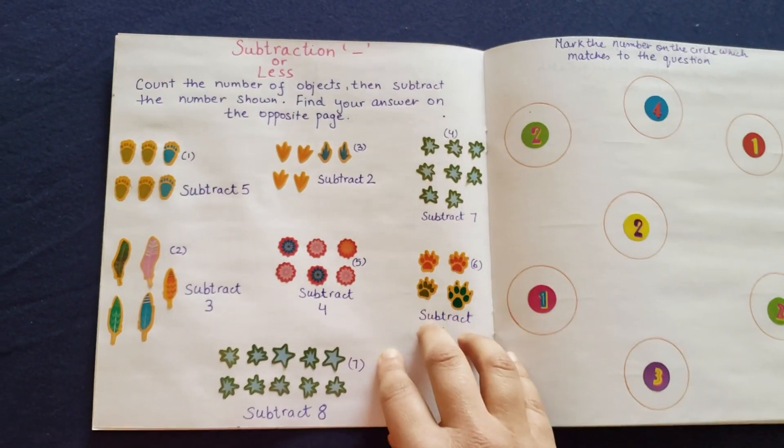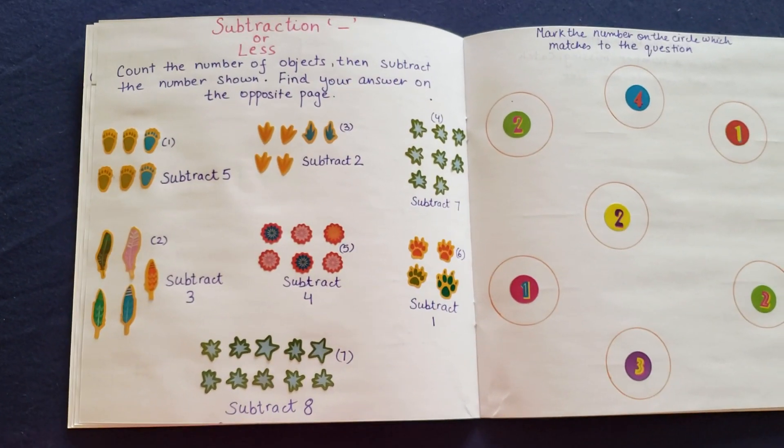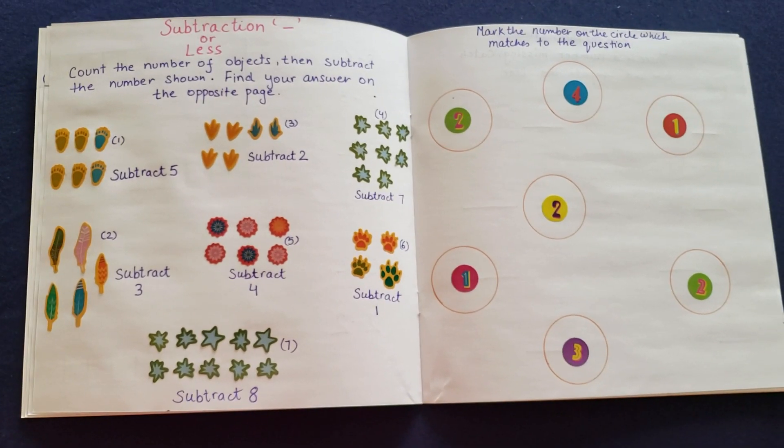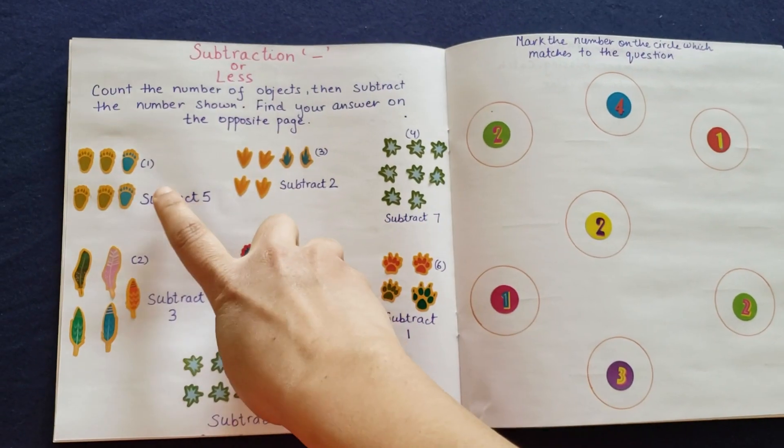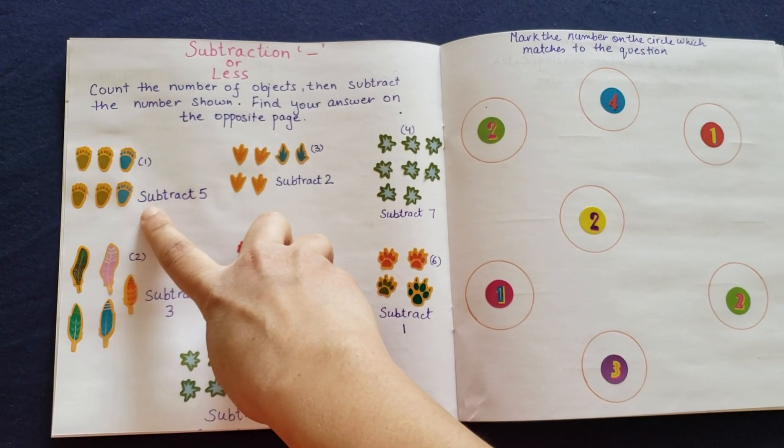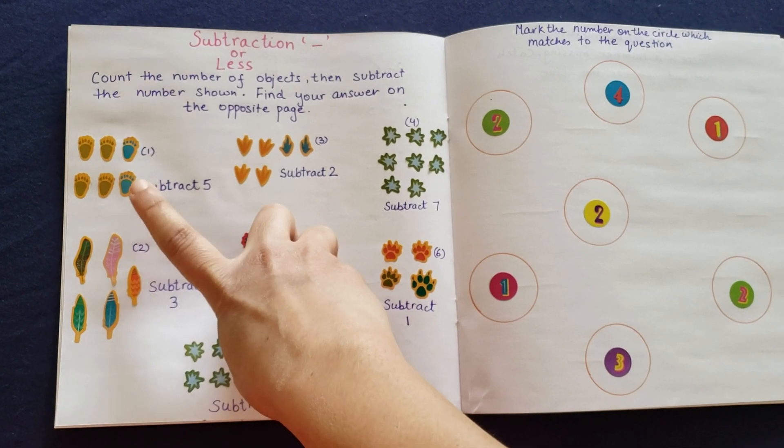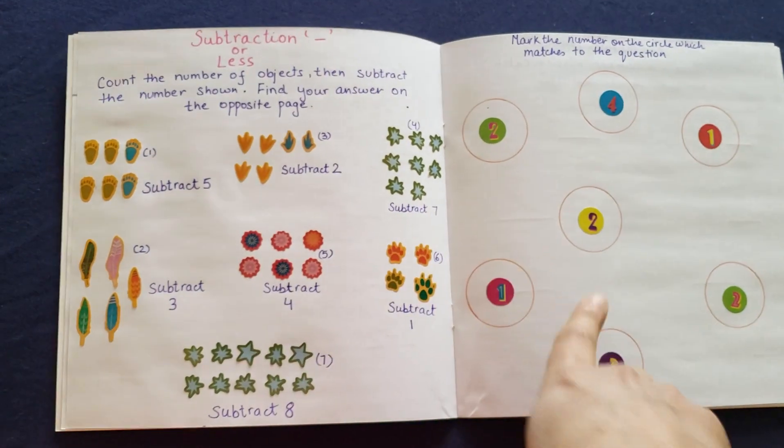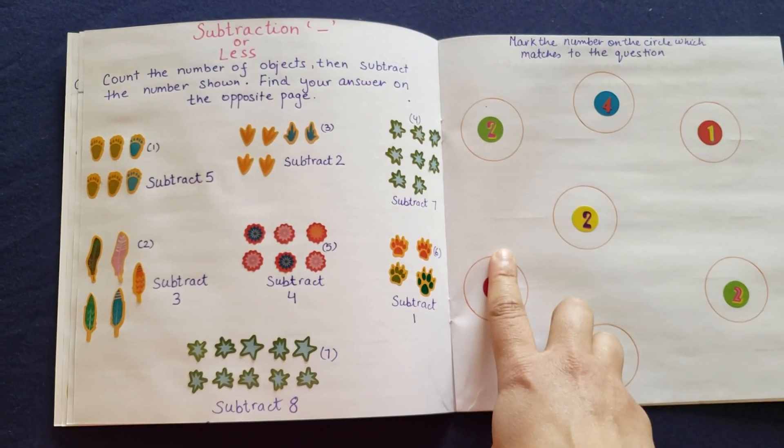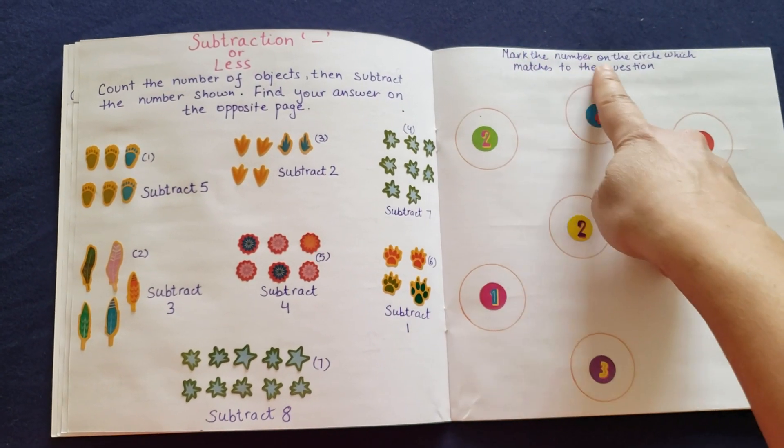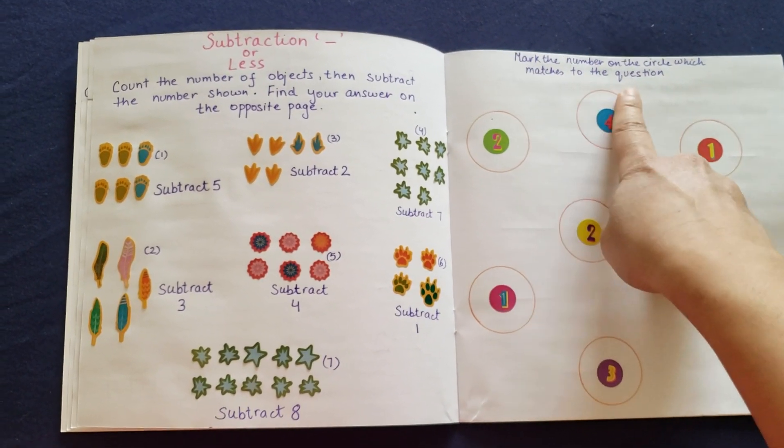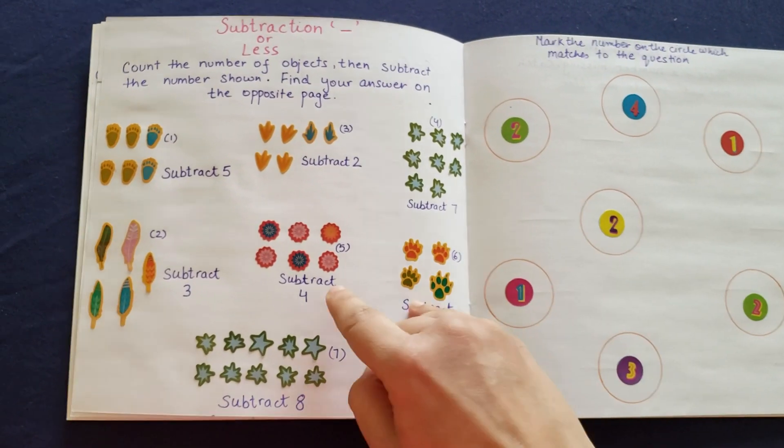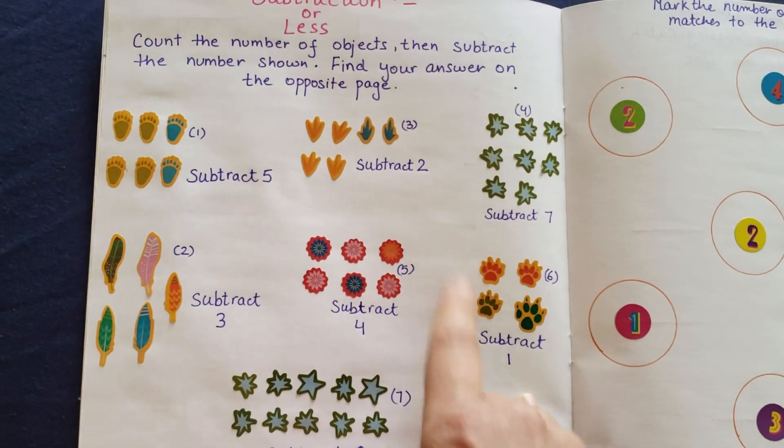Okay, moving forward. I have subtraction or less. Count the numbers of objects and subtract the numbers shown. Find your answer on the opposite page. So you have all the answers right here. I have six footprints right here and she needs to subtract five. Once she does that, she needs to find what's the right answer and write the number right here. Mark the number on the circles which matches to the question. We have seven of them right here. And then we have the answers and it very clearly says the time that you have to subtract.